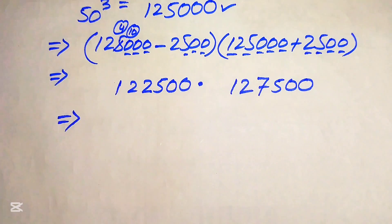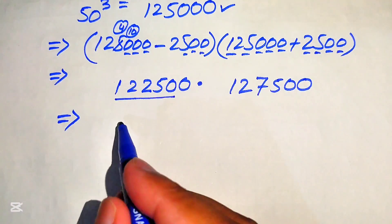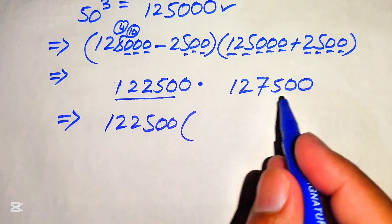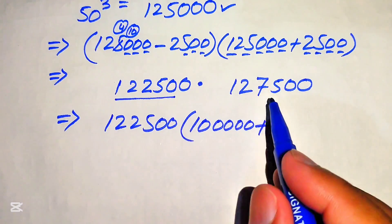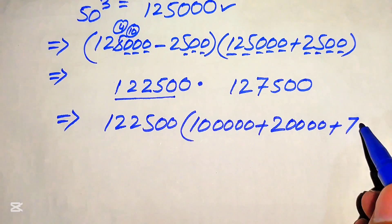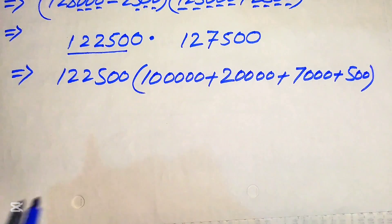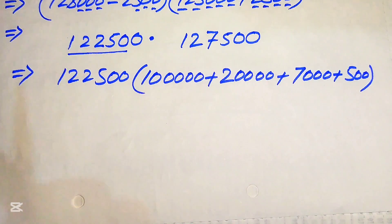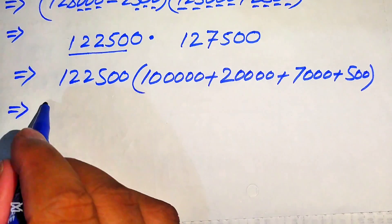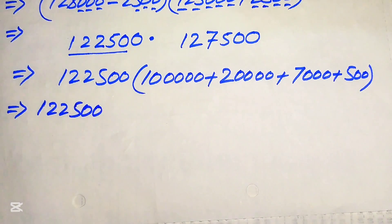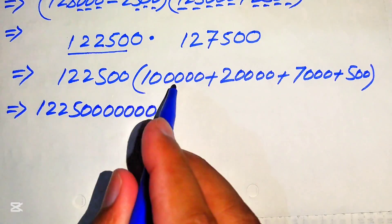We will multiply these bigger numbers in a smart way. We break 127,500 as: 1 followed by 5 zeros, plus 2 followed by 4 zeros, plus 7 followed by 3 zeros, plus 500. We break the number into these parts and multiply 122,500 with each part. Multiplying by 100,000: we add all five zeros, giving 122,500 followed by five zeros — that's 7 zeros total.